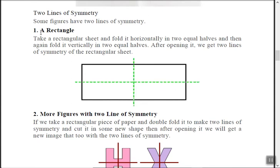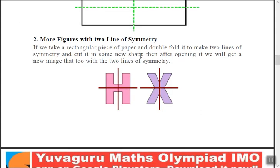A rectangle — how many lines of symmetry does it have? If you fold a rectangle on the vertical line, it's a mirror. If you fold a rectangle on the horizontal line, it's also a mirror. But if you fold a rectangle on the diagonal, it's not a mirror. So a rectangle has two lines of symmetry.